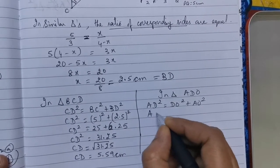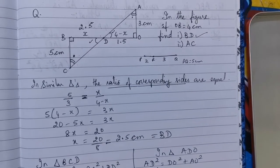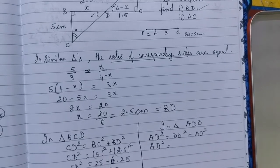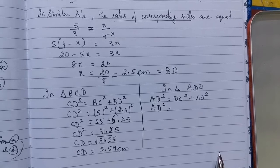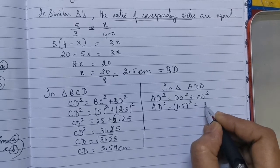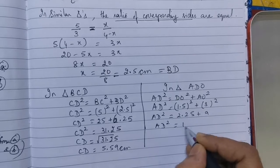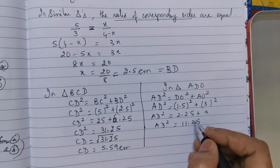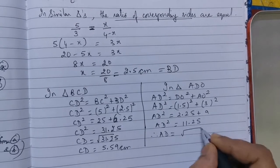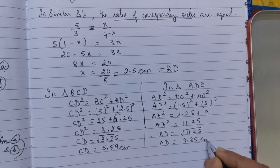To find AD², we substitute the values of DO and AO. Looking at the figure, DO is 1.5 and AO is 3 centimetres. So DO² plus AO² gives 2.25 plus 9, so AD² equals 11.25. Therefore AD equals the square root of 11.25, which is equal to 3.35 centimetres.